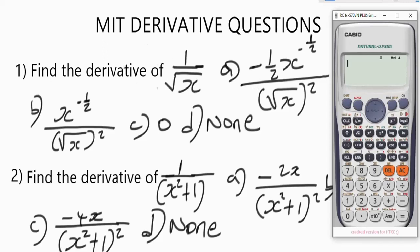The idea here is that we use this stored value to differentiate the function and also use it to evaluate the options. For question one, we need to find the derivative of 1 over √x. To bring up the derivative function, press Shift then the integral button. Enter the fraction 1 over √x, then press Alpha X. Navigate to the input point and enter the stored value of 2. Importantly, ensure that the brackets are balanced before pressing equals — you should have one bracket on each side.